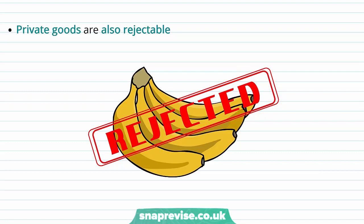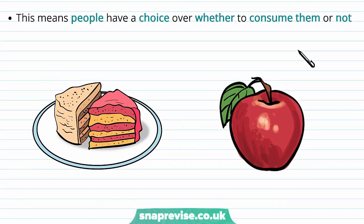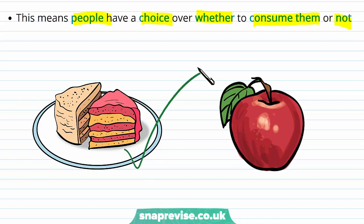The third characteristic we can identify is that private goods are also rejectable. Consider a bunch of bananas — if a person does not wish to consume them, then they can be rejected. This implies that people have a choice over whether to consume them or not. Rejectability means that people have a choice over whether they consume a good or not. For example, consider someone who might end up rejecting a good — they can do this as private goods can be rejected by consumers.